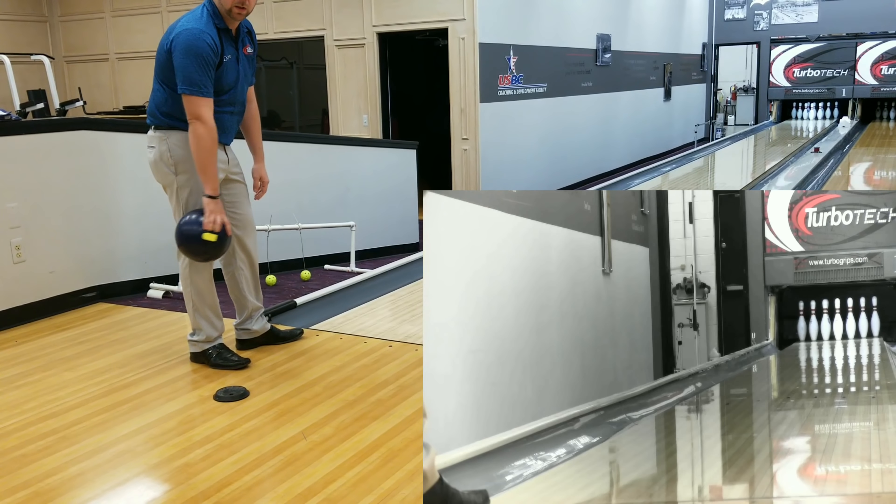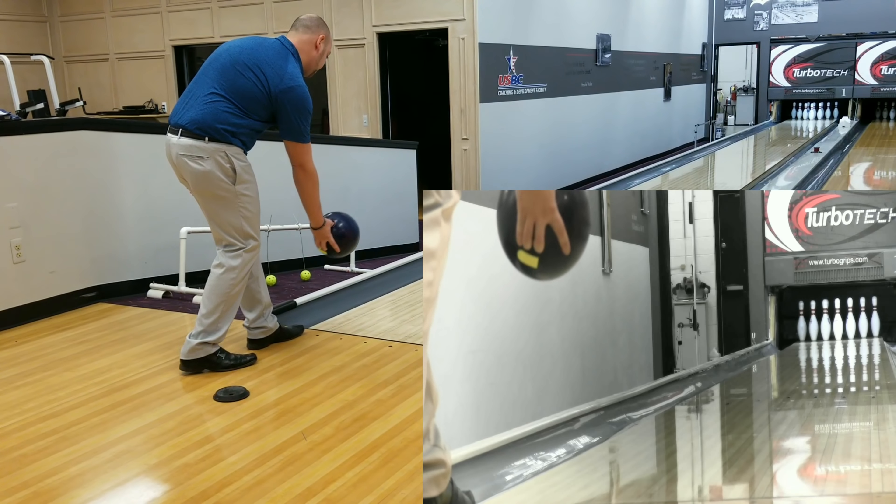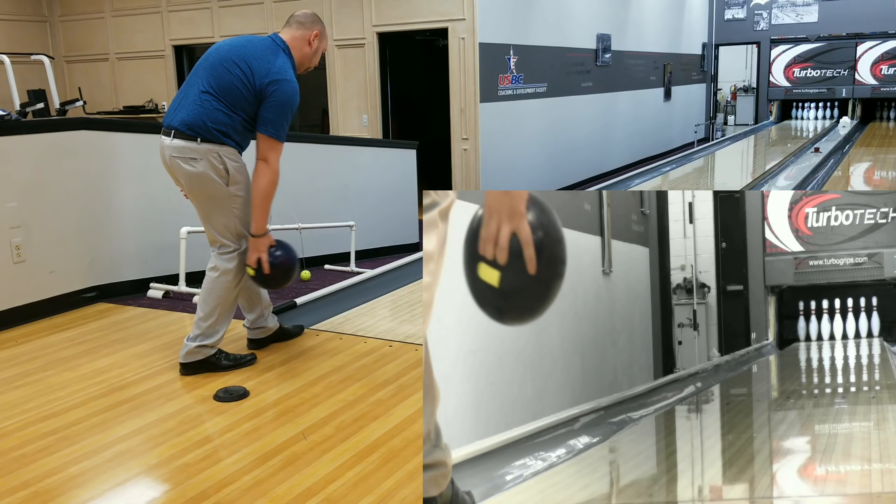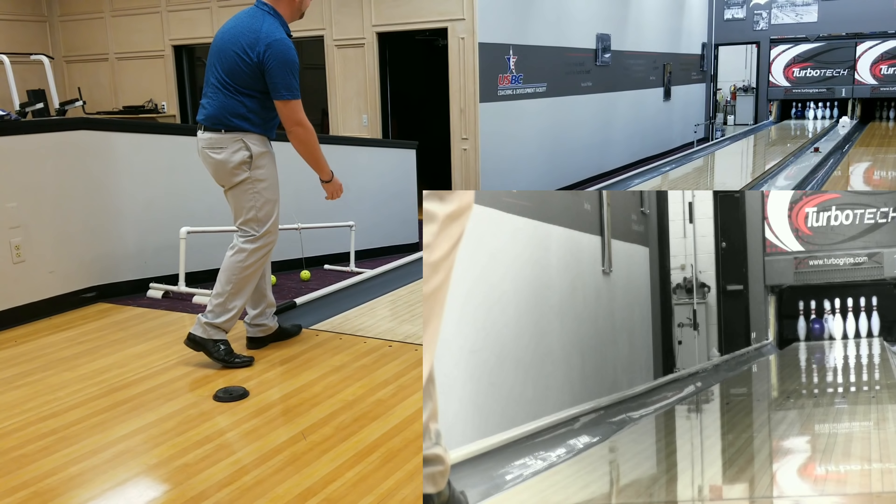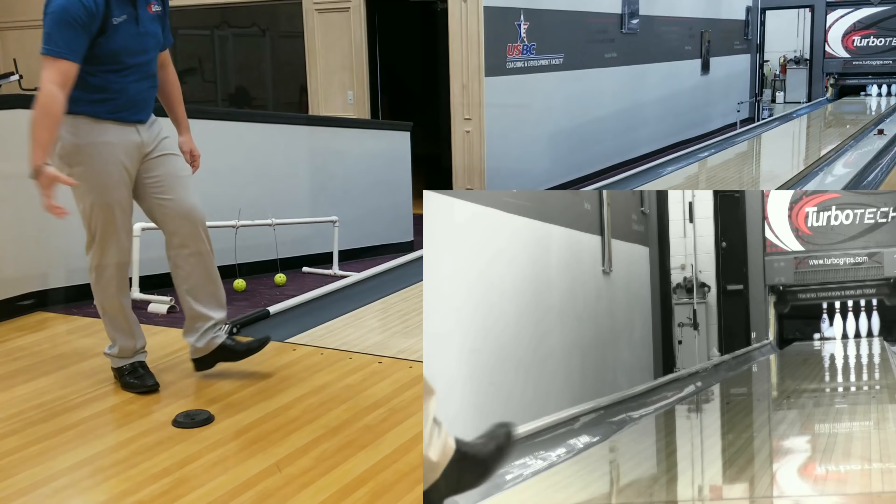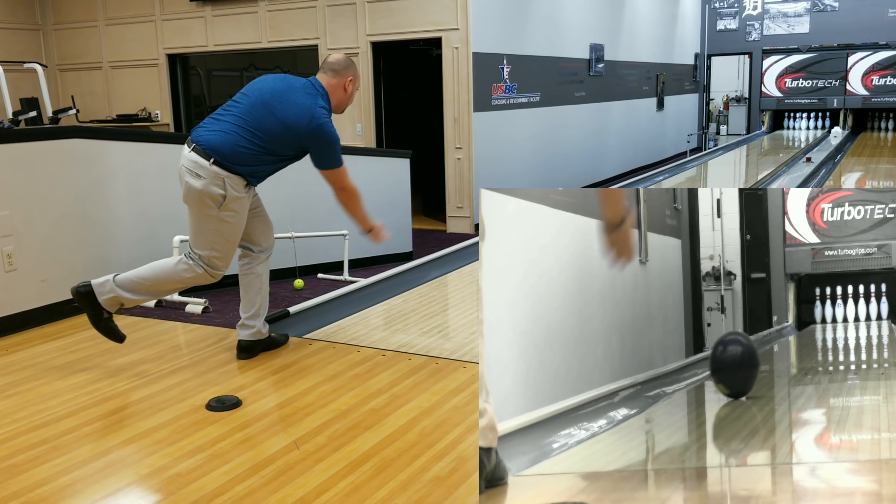Alright, so talking about rotation, what we need to do is we need to figure out a way to get the ball off your thumb much faster than what your fingers are while also creating a yo-yo type reaction. We're going to talk about the yo-yo in a second, but I have tape on this ball at the top of the fingers so you can see the ball rotate down lane and I'm going to show you an example of what most people do.